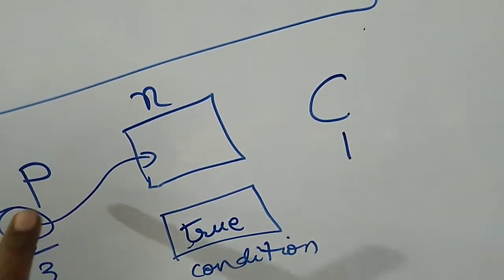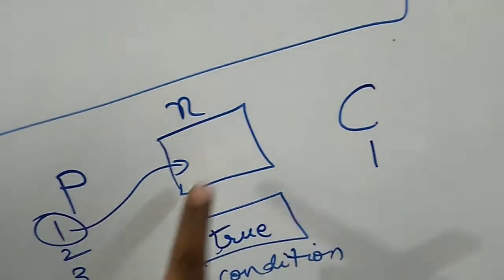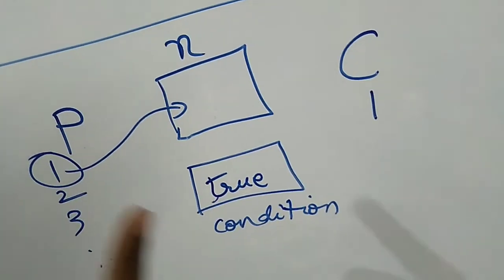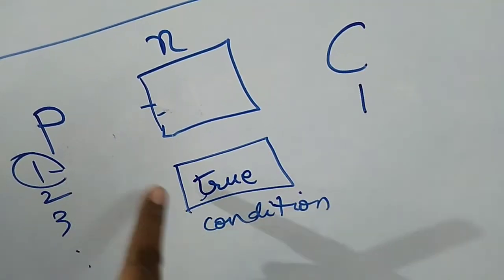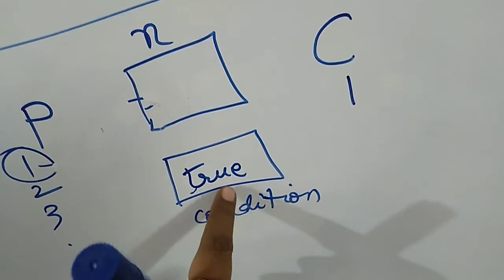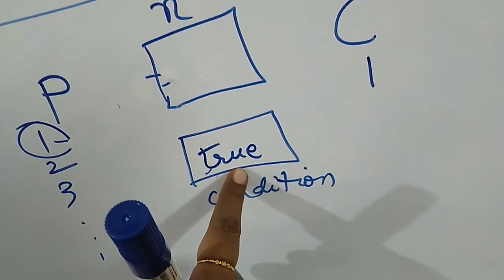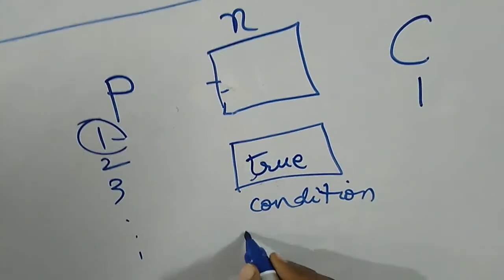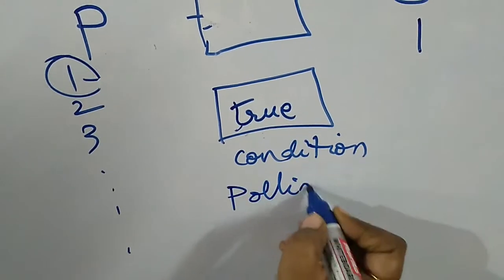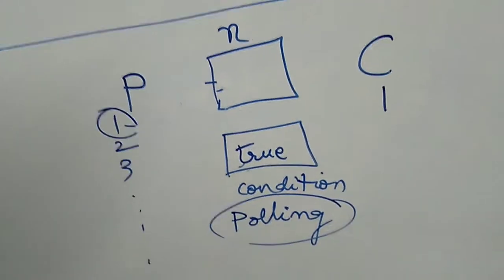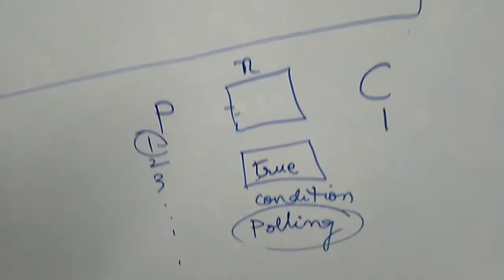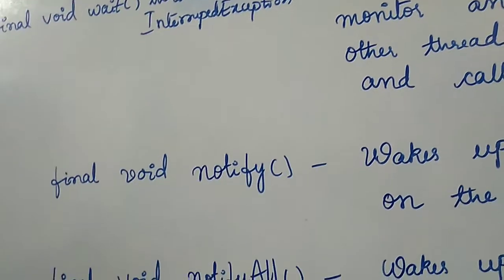The producer will not simply put two into the shared resource because it doesn't know whether the consumer has taken the value or not. So the producer repeatedly checks whether this condition has become true. Repeatedly checking whether a condition has become true or not is called polling. Java does not have polling — Java has avoided polling with elegant methods such as wait, notify, and notifyAll.